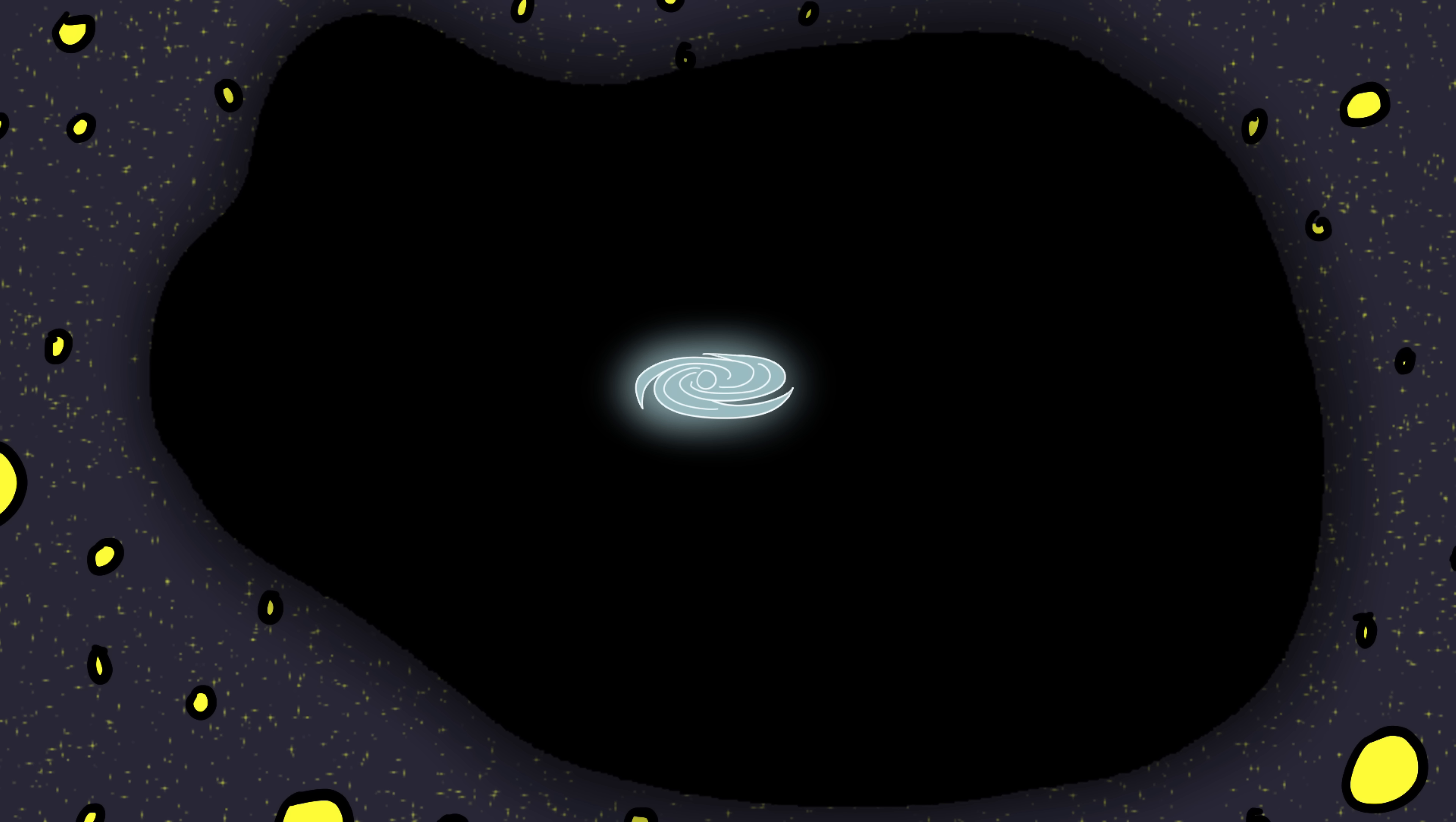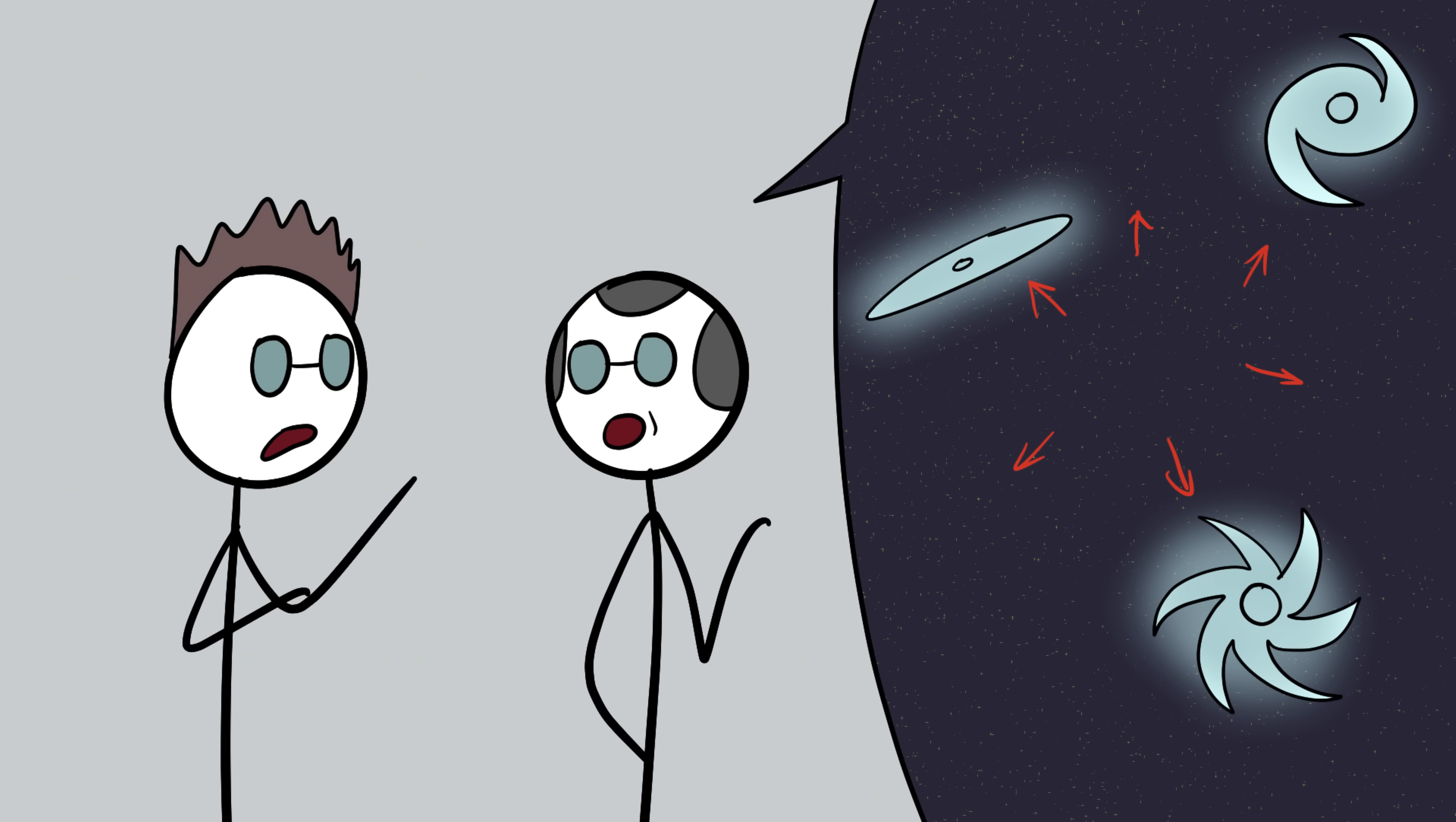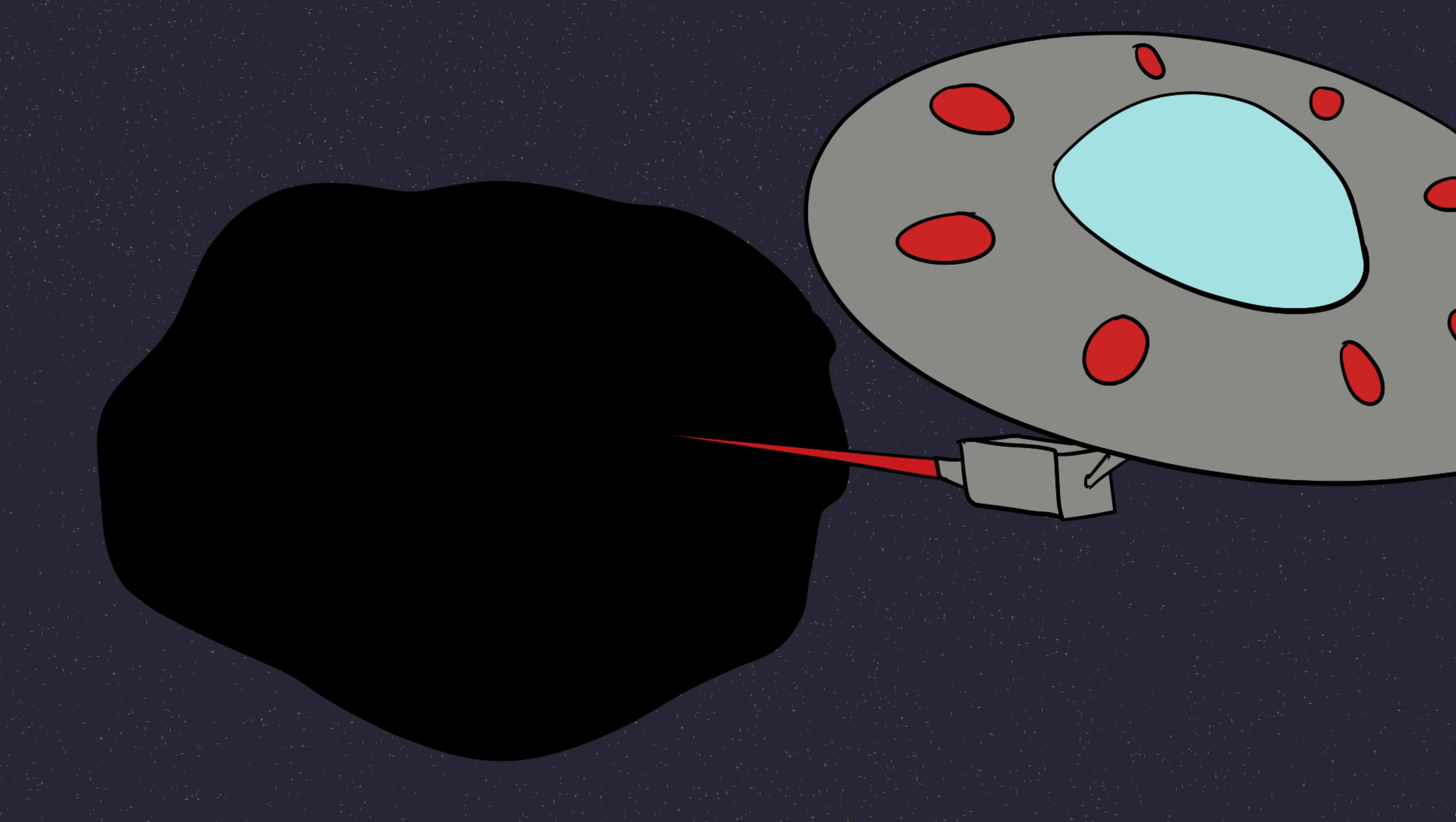To put it in perspective, if the Milky Way sat at the center of the Boötes Void, we wouldn't have discovered other galaxies until modern telescopes were invented. That's how empty it is. Looking into it is like staring into cosmic static, as if the universe itself glitched and left a blank space. Scientists think the void was formed naturally as galaxies clustered elsewhere, leaving behind a cosmic desert. But of course, there are creepier theories.